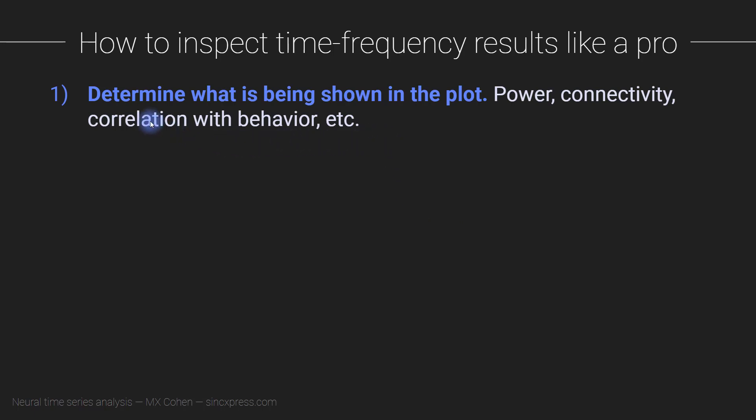So step one, this is the first thing that you do when you look at a time-frequency plot, you have to determine what is being shown in the plot. Now, mostly, the most common feature of the data to show in a time-frequency plot is power, that's the amount of energy in the signal at a given point in time at a given frequency. But you will learn throughout this course, that power is not the only thing that can be shown in the plot.